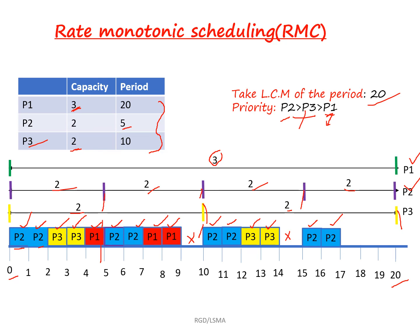Moving on to 15 to 20: for every five-interval period, allocate P2 first as the high-priority process — two units of execution. After that, allocate P3. P3 was allocated two times from 0 to 10, and two times from 10 to 20, so the P3 process has also completed its execution. Therefore, after time 17, there are no remaining processes to schedule — P1, P2, and P3 have all completed.